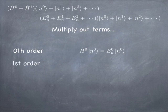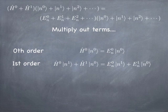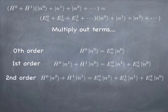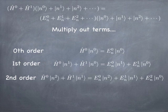Then we look at the first order situation. There are two first order terms: the original Hamiltonian acting on the perturbed state, and the perturbation acting on the original state. That has to equal the unperturbed energy multiplied by the first order perturbation, plus the first order energy perturbation times the unperturbed state — each of those terms, if you add the orders, they add up to one. And you can get the same thing for the second order: the unperturbed Hamiltonian on the second order correction, plus the first order Hamiltonian on the first order correction, equals the original energy times the second order state, plus the first order energy perturbation times the first order state, plus the second order energy perturbation times the original state.